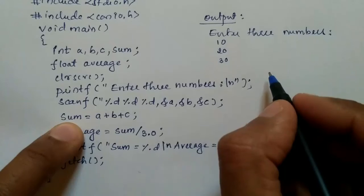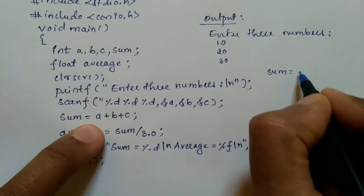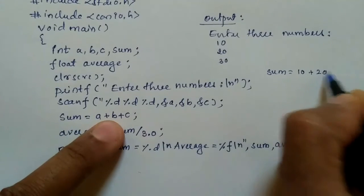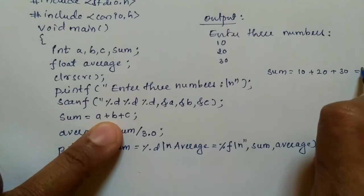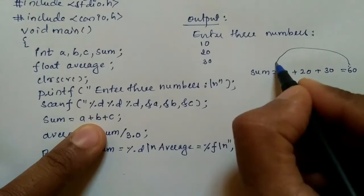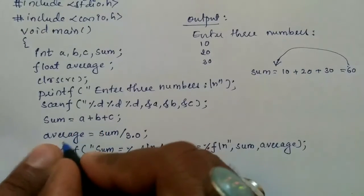Now it is going to perform this calculation: sum = a is 10, b is 20, and c is 30, so total 60. So this 60 value is assigned to the variable called sum.